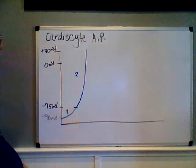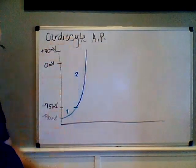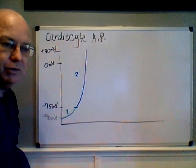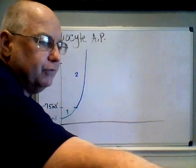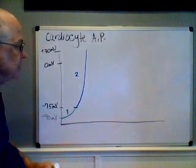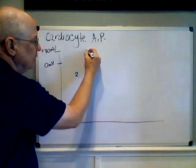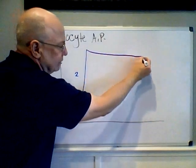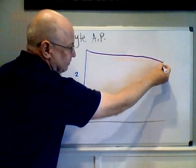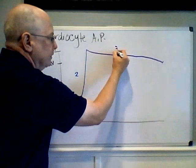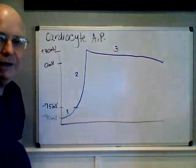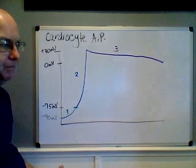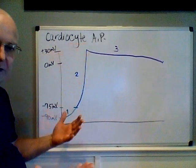Once we hit plus 30 millivolts and all the sodium channels have closed, the cell reaches what we call the plateau phase. It actually starts to decline in voltage, but not like a neuron — it extends for a long period of time. This plateau phase, the third step of the cardiocyte action potential, happens because as we open voltage-gated potassium channels, potassium begins exiting the cell.